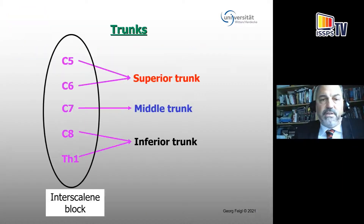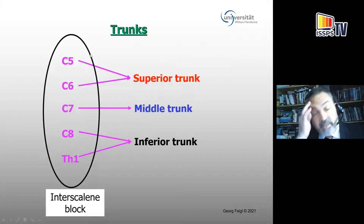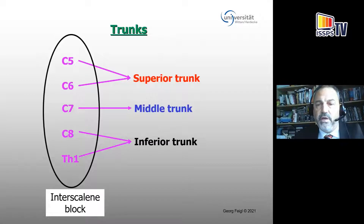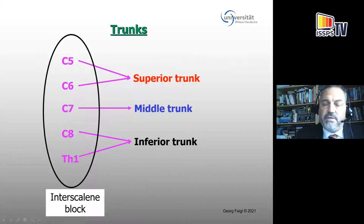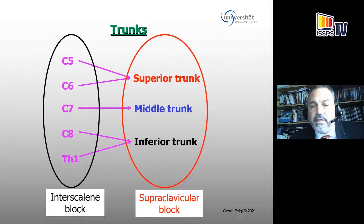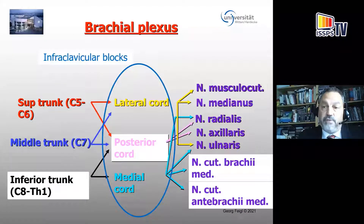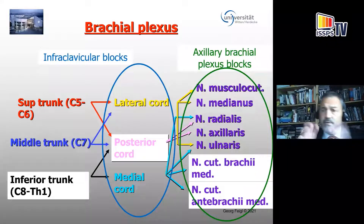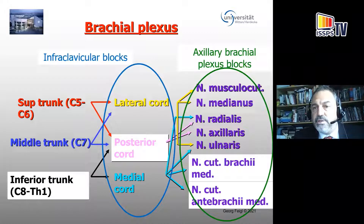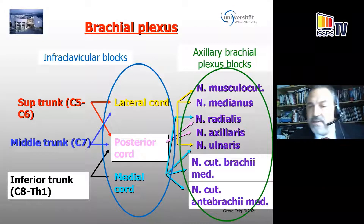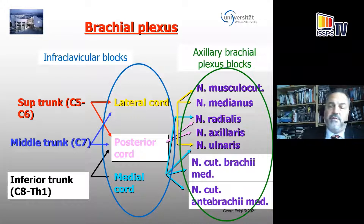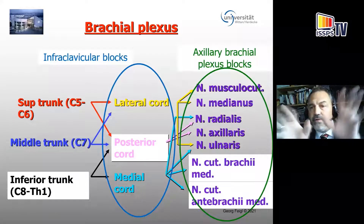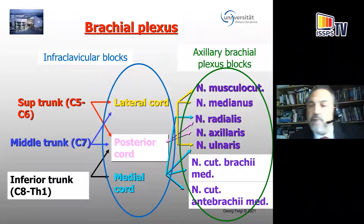You can see that first of all you have these ventral rami, which are regularly found in the interscalene gap — so where you perform the interscalene block, you get these ventral rami. Then they divide into the different trunks where you can perform the supraclavicular blocks, continuing with the formation of the cords, which is already infraclavicular. And then finally, in the axillary fossa, in a very large space determined by the deep axillary fascia, you have the axillary brachial plexus blocks to be performed. In this axillary fossa, the cords are already dividing into the different nerves, which are running distally and innervating different areas and muscle groups.